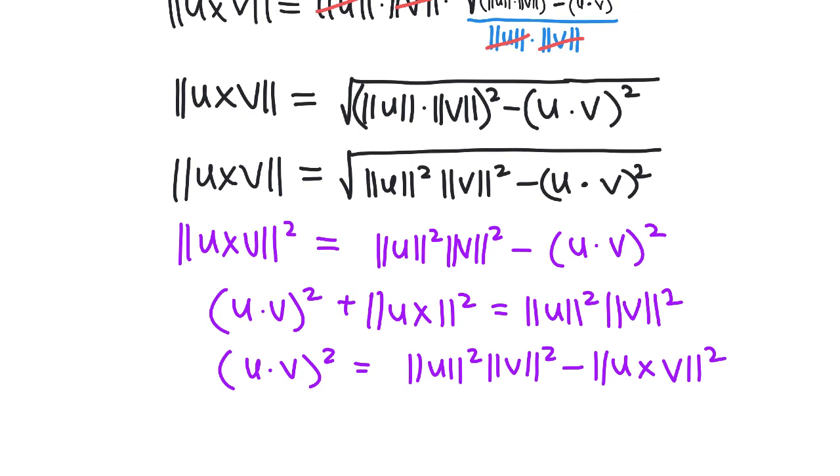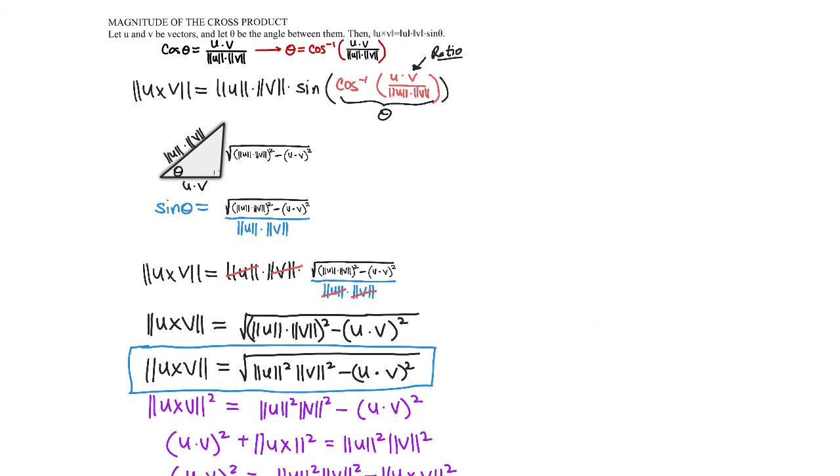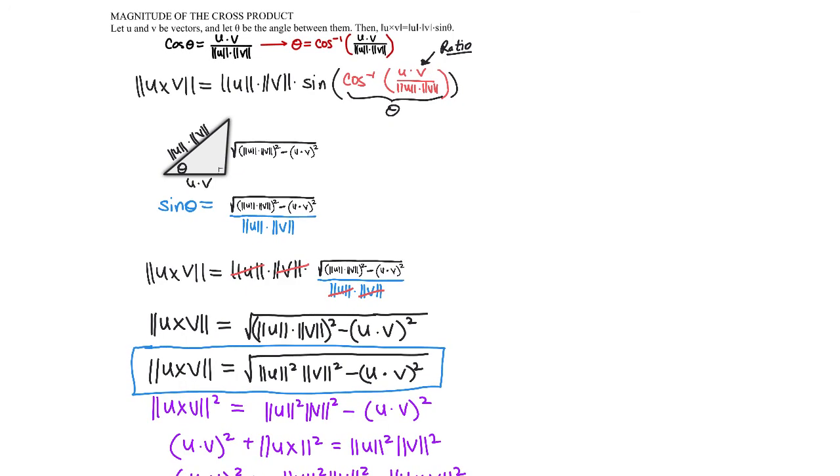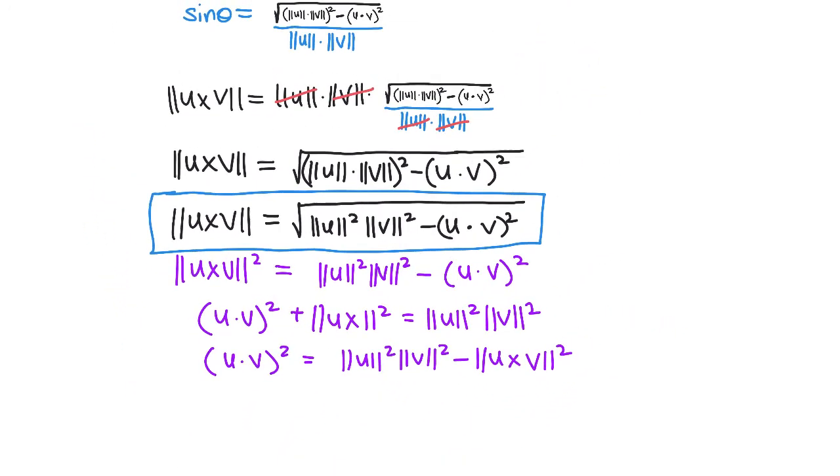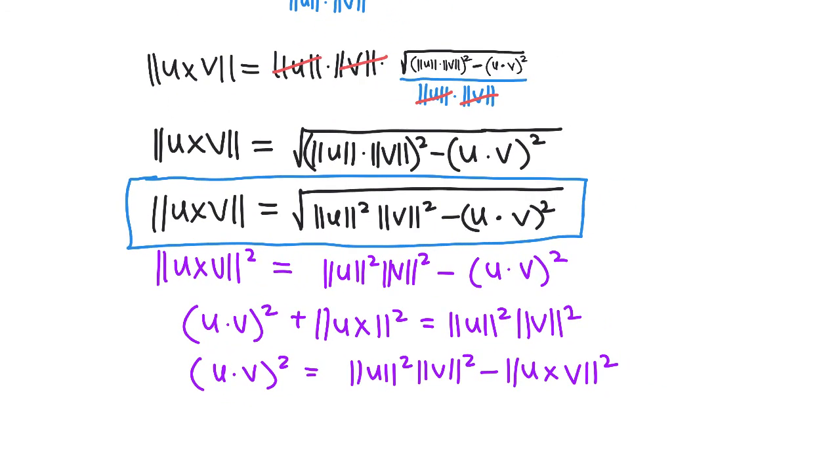There are lots of different variations of this one idea, but it all comes down to the original relationship: ||u x v|| equals ||u|| ||v|| times the sine of theta. Using trigonometry, we can come up with a brand new relationship—using trigonometry to not have to use trigonometry anymore. That's what generalization does.